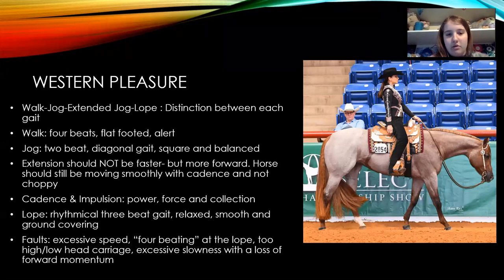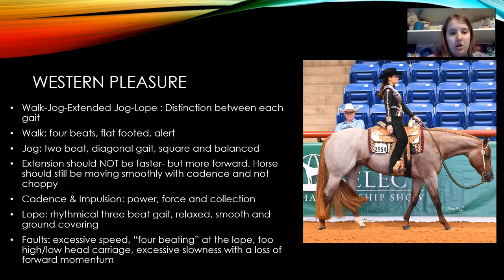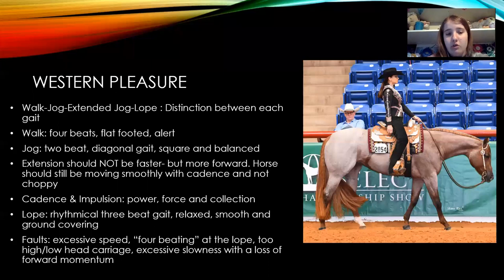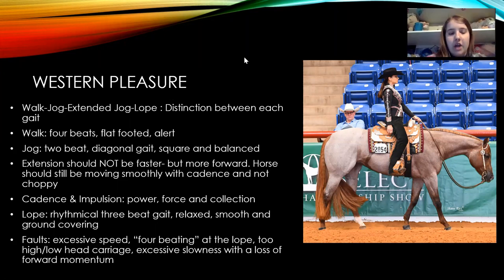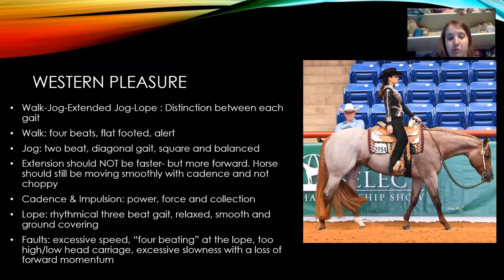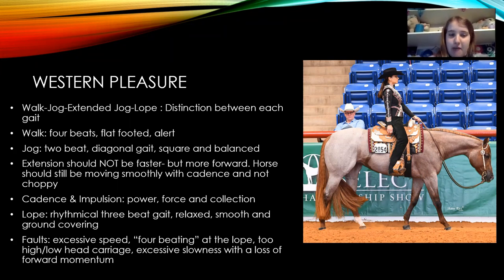Your jog needs to be 2-beat and diagonal, and you want it to be square and balanced. It should be able to cover some stride and move out, but you don't want them to be excessively fast. When you extend the jog, it shouldn't be faster, but it should be more forward. The horse should still be able to move slowly with cadence and not have a very choppy stride. Cadence and impulsion is how much power and force the horse has behind them that allows them to collect more by using their hind end. When extending, they should be moving with more cadence and more propulsion in their hind end, as opposed to just moving really fast and choppy.